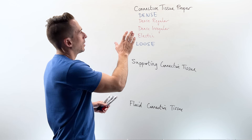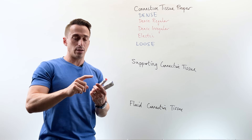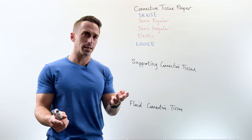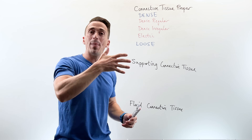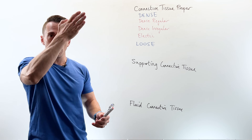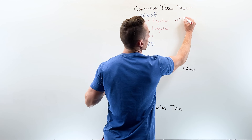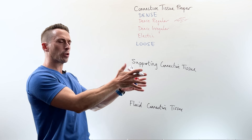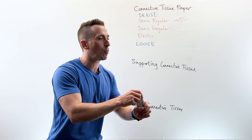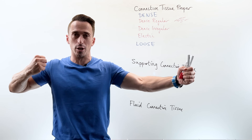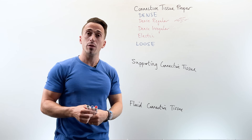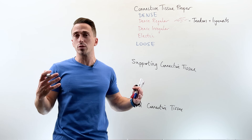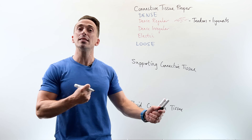Dense means densely packed cells, gels, and fibres. Regular and irregular refer to the fibre arrangement. Regular means all fibres face the same direction — they need to resist stretch or pulling forces in one direction. Dense regular connective tissue is found in tendons and ligaments — the structures that hold bone to bone and muscle to bone — resisting stretching and tearing forces in single planes.